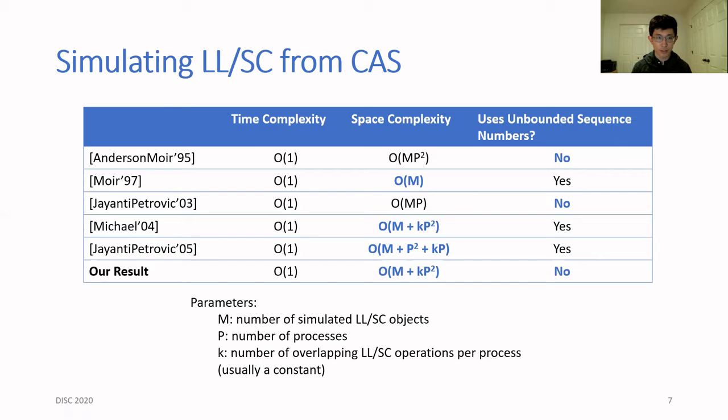There are several desirable properties that a simulation can have. First, all operations should take constant time. Second, it should also be space efficient, meaning that the space usage should be linear in the number of LL/SC objects plus some additive overhead that is shared across all the objects. In this table, I highlighted all the implementations that satisfy this definition of space efficiency. And finally, the simulation should ideally avoid using unbounded sequence numbers.